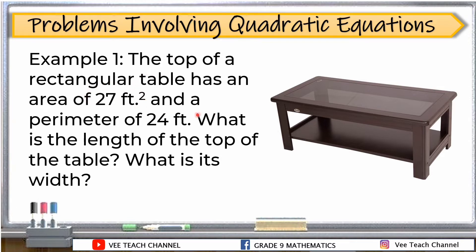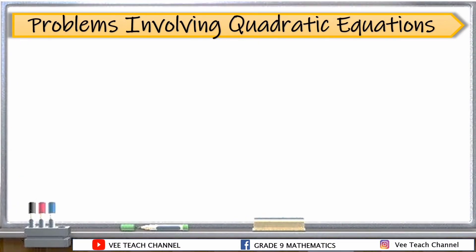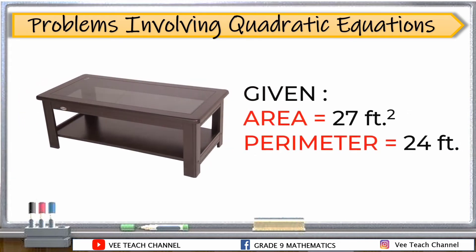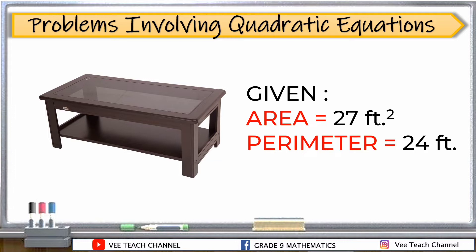Intindihin muna natin yung problem. So, sabi, yung top of the table daw ay may area na 27 feet squared, tapos perimeter niya is 24 feet. Ang kailangan natin hanapin is yung length ng ating table, tapos yung kanyang width. Let's write down the given.